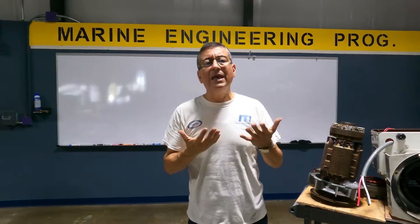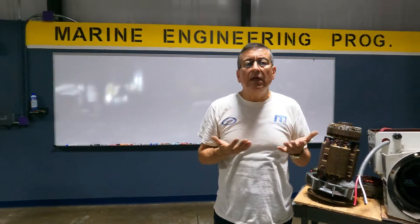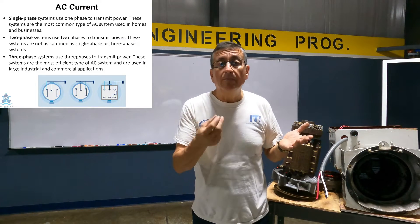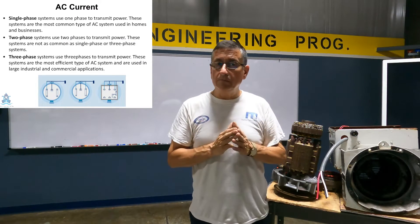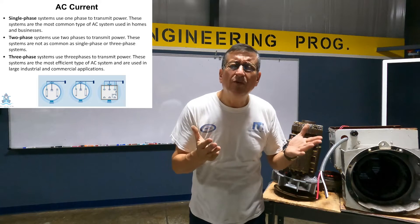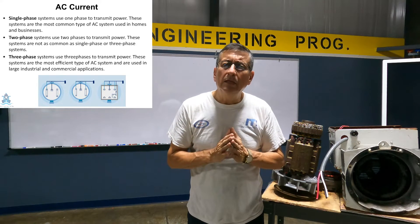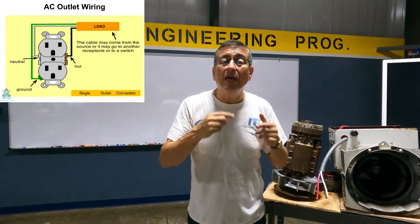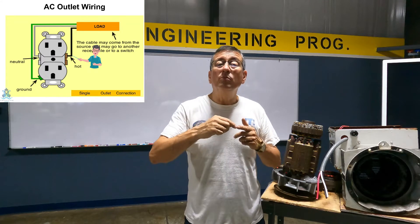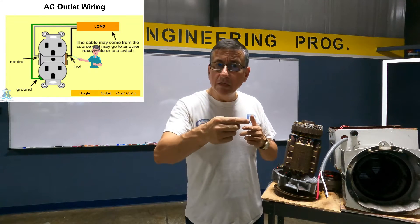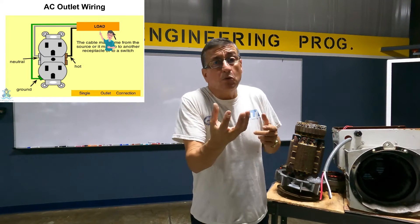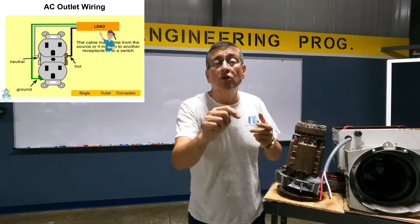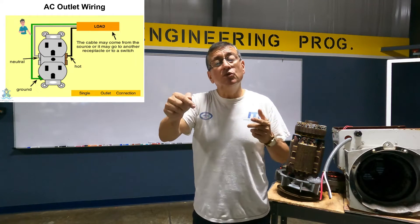Now we are going to analyze AC current. In AC current, remember, we have a single phase, double phase, or three phases. What is the function of the neutral? The neutral is exactly the same — it is the return. The hot line supplies current. The motor uses the current. The rest of the current not used by the motor returns through the neutral.